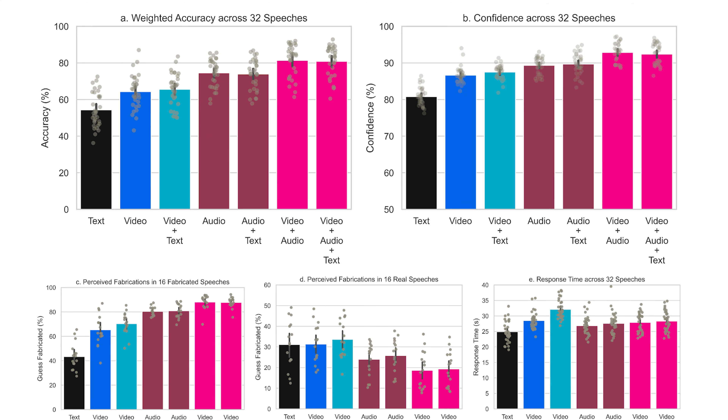The study had two main parts. In the first part, they looked at how well people can tell whether something has been fabricated based on the content of the media — whether you only get text, audio, video, audio and video, etc. Text is the thing people seem to be worst at identifying as fake, whereas audio and video — especially combined with transcript — are where people perform best. For me personally, the thing that made the audio and video option easiest was the lip syncing, since in most fabricated videos the mouth movements didn't match the audio.